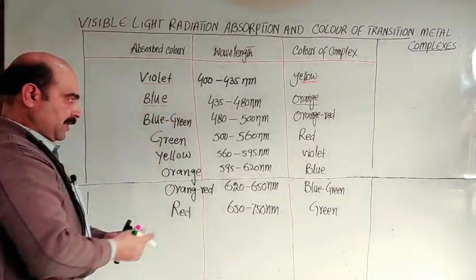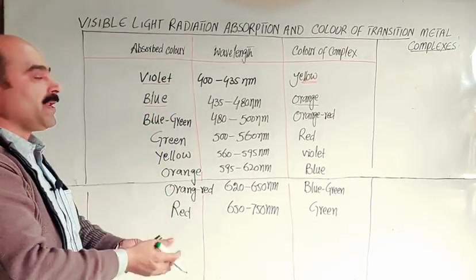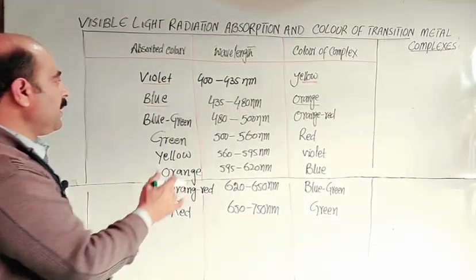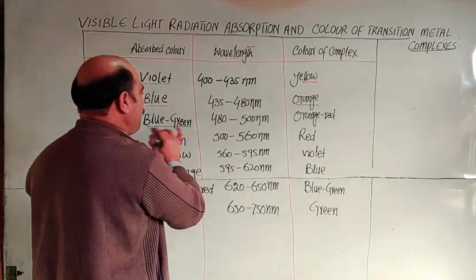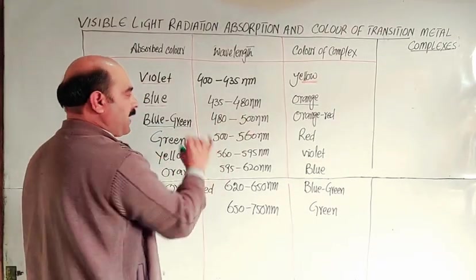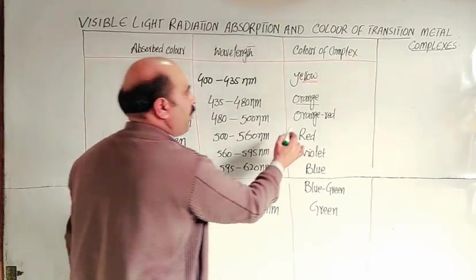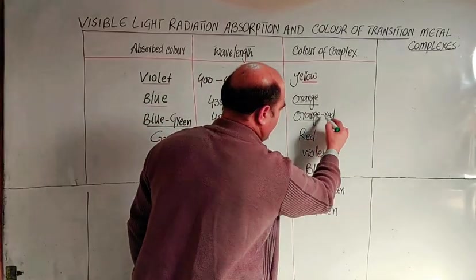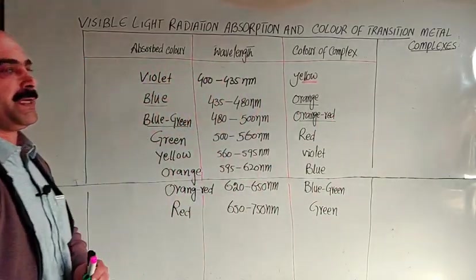If it absorbs blue-green, meaning both blue and green are absorbed, then the blue-green wavelength is 480 to 500, and the result is orange-red. This means a mixed color will appear - orange or red or orange-red type.